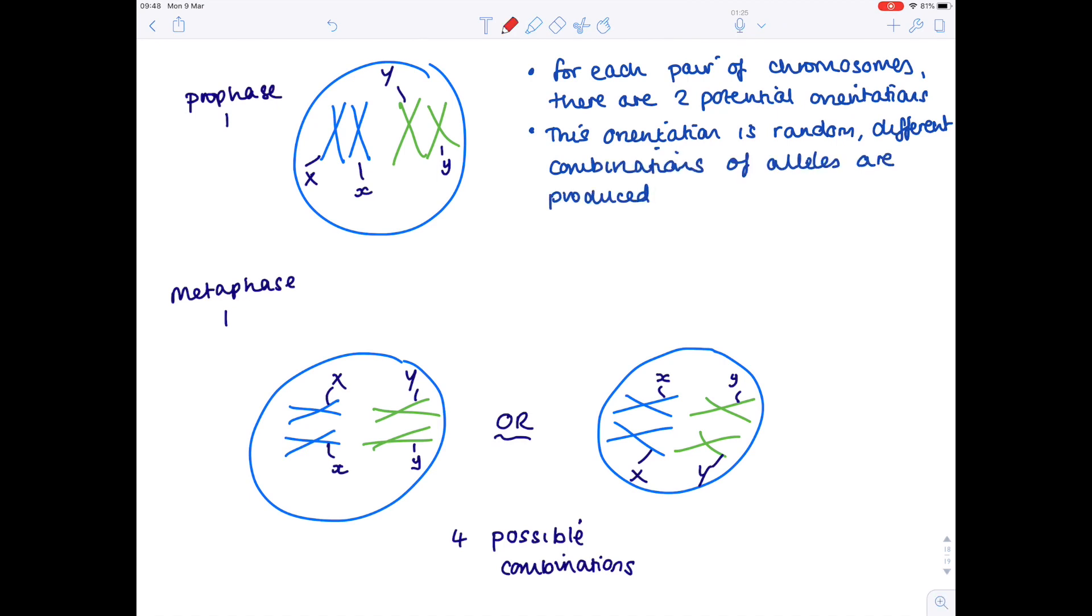In terms of applying some maths to this, then, there's just a little formula you need to know, which is that the number of possible combinations of chromosomes produced by random orientation is 2^n.